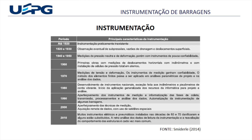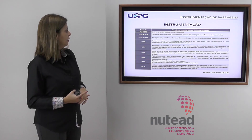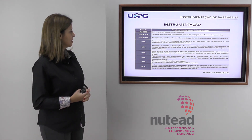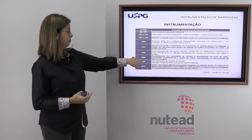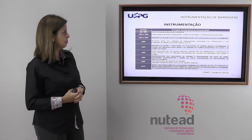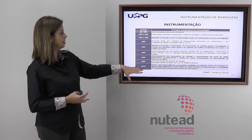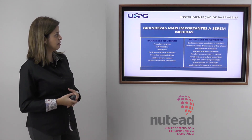Essa tabela mostra a evolução da instrumentação. No início, lá em 1920-30, não havia nada de instrumentação nas barragens. Em 1950-60 começaram a existir alguns instrumentos, ainda com pouca confiabilidade. Isso mostra o quão recente é o uso da instrumentação para monitoramento dessas barragens. Em 1990, houve aperfeiçoamento dos instrumentos de medição e informatização das fases de coleta e transmissão, passando a ter instrumentos mais confiáveis e bastante utilizados na questão da segurança.